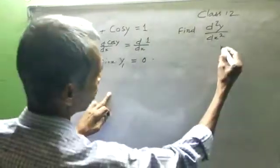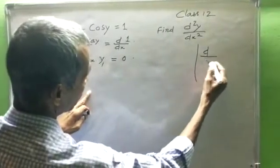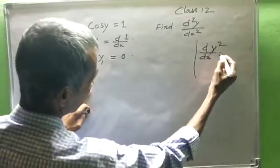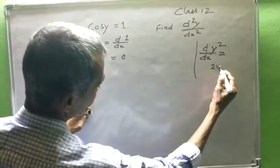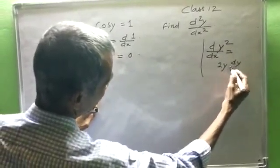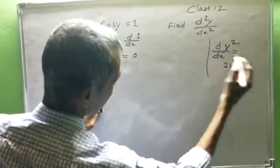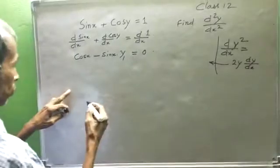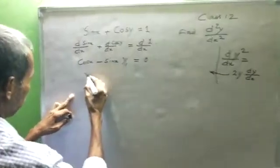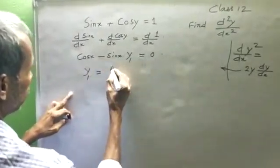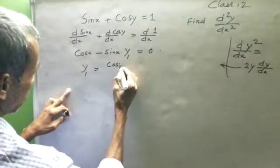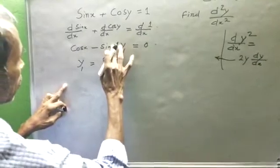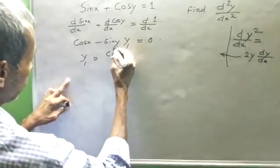So, d/dx of y² equals 2y dy/dx. Now, y₁ equals cos x... this is sin y.